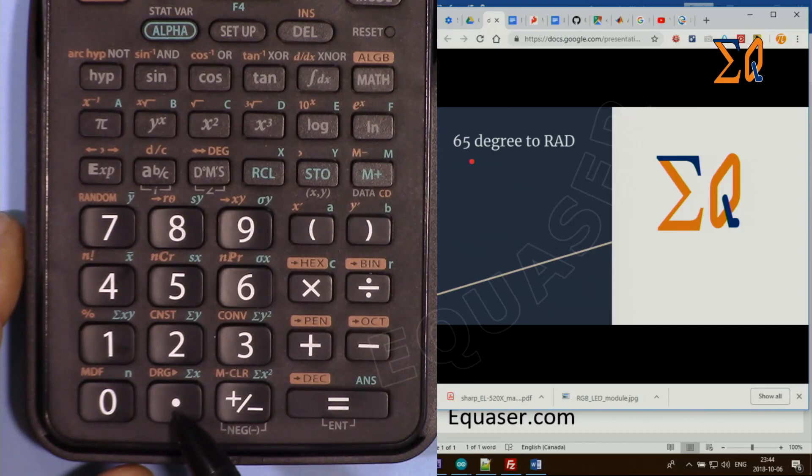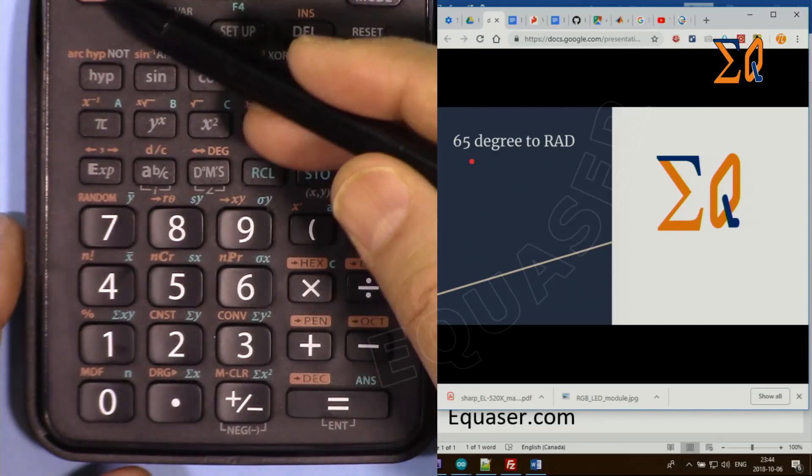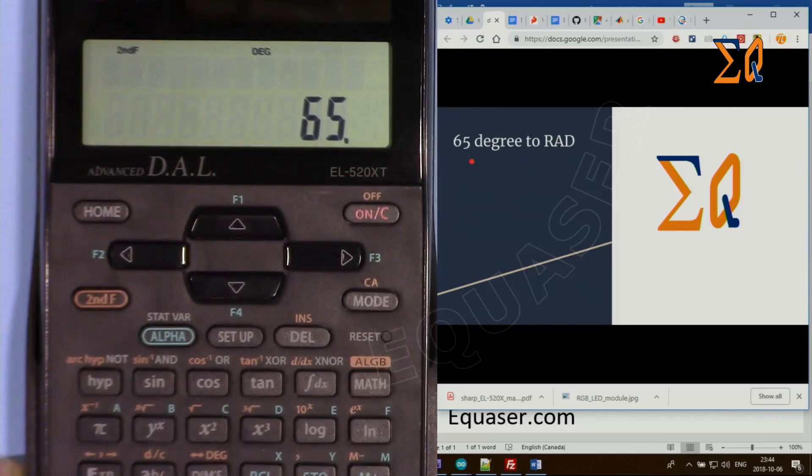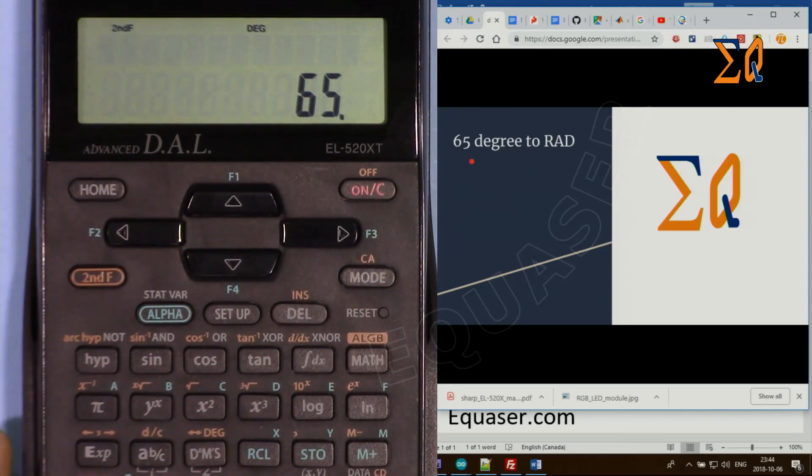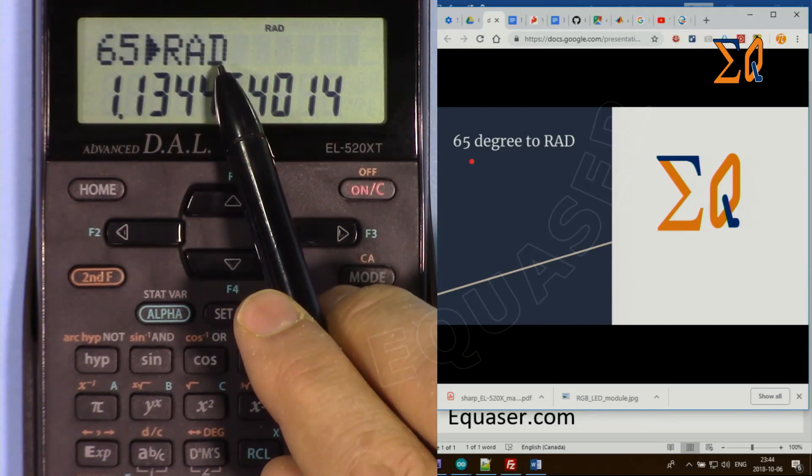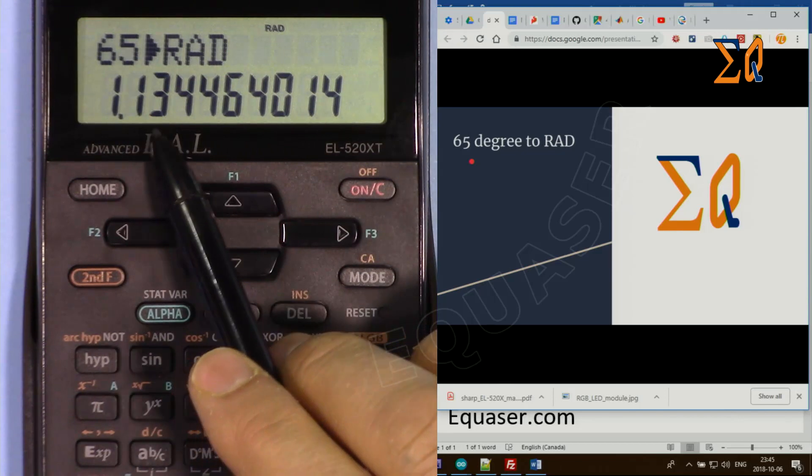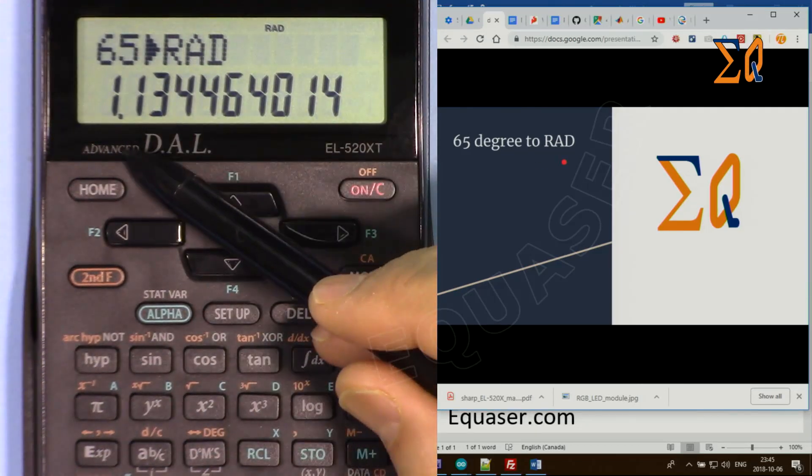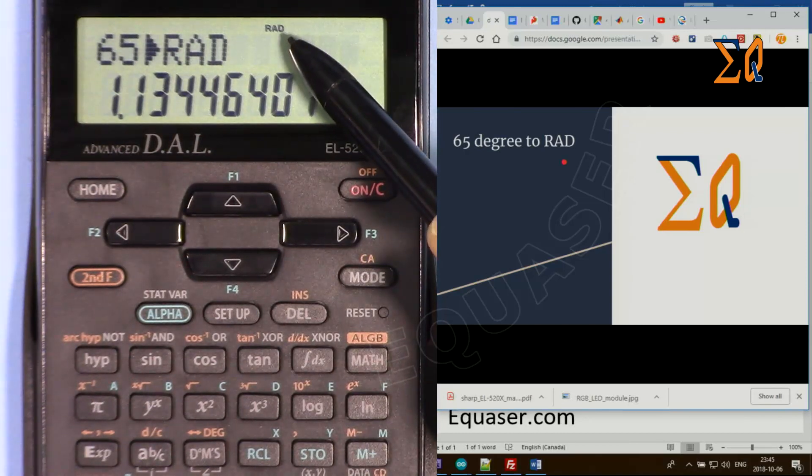The second function, when you use it, will be activated. So second function has been pressed, and DRG. Now this has been converted to radians: 1.1344. That's converted to radians. Pay attention: as soon as you converted, the calculator setting also has changed to radian mode.